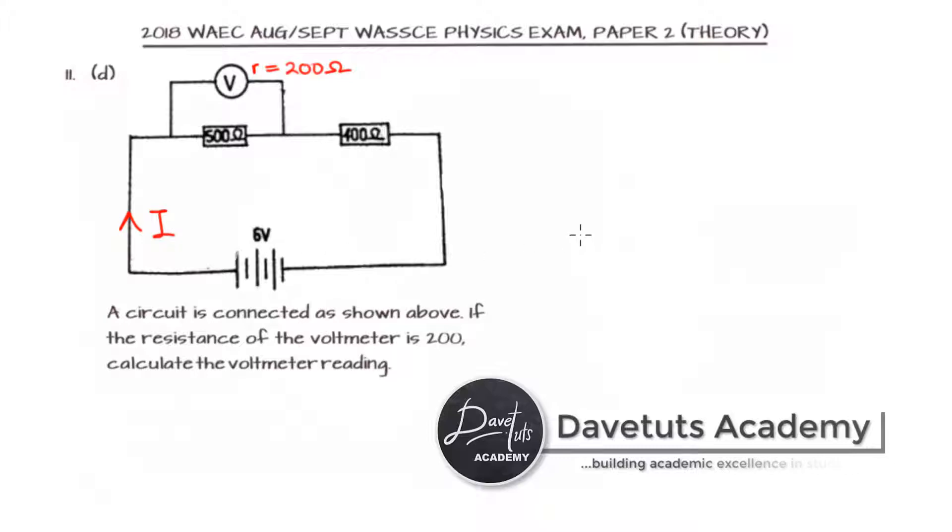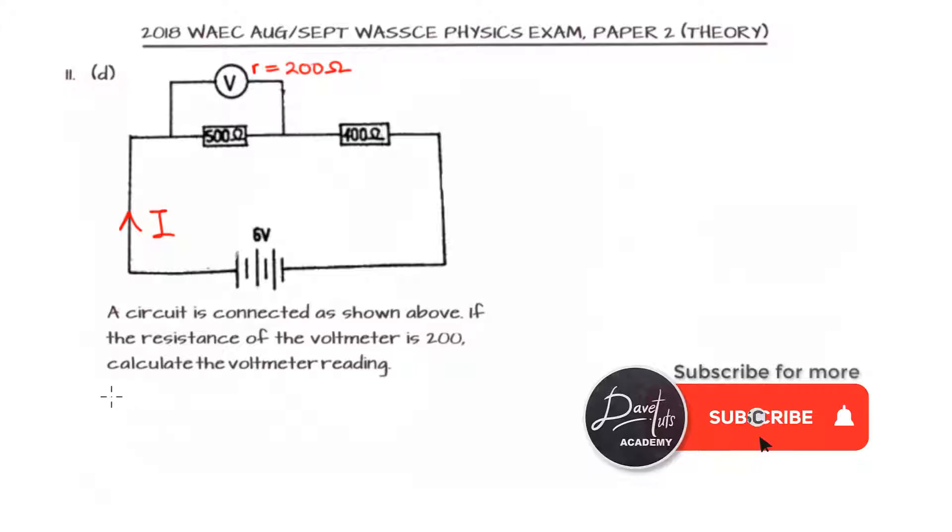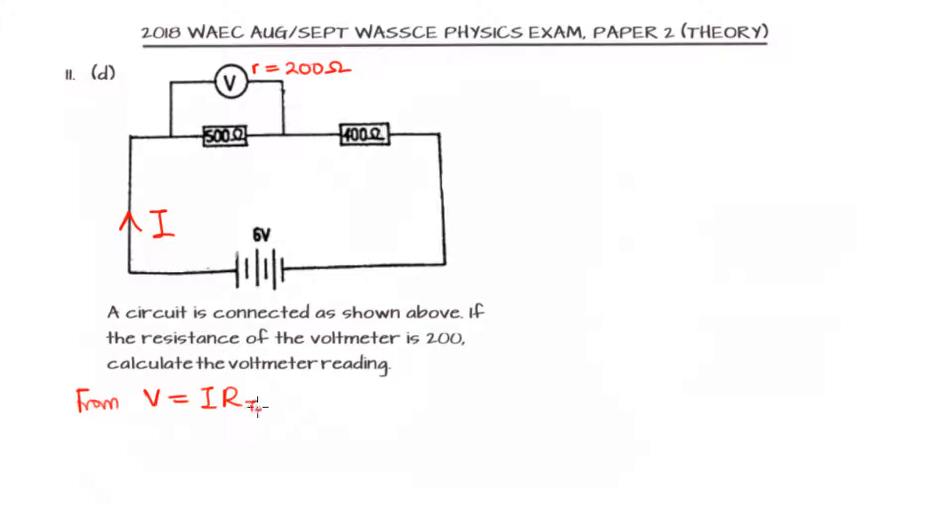But first, before we can evaluate the current, you need to find the total resistance of the circuit. So if you have that, we can use Ohm's law: V equals I R total, where R total is the total resistance, so that I will now be voltage divided by the total resistance. So our first assignment is to find the value of the total resistance.